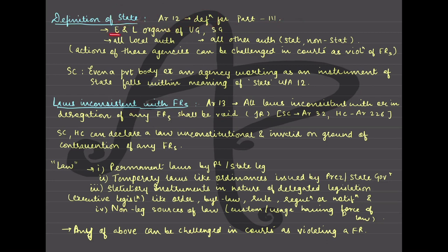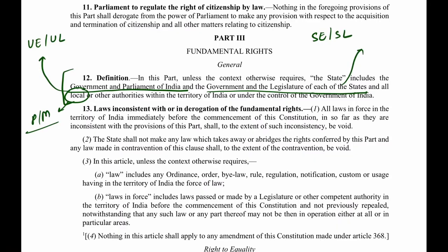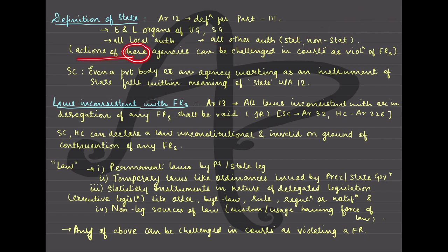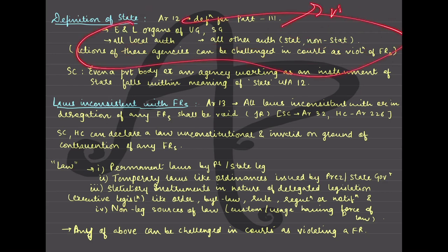Article 12 gives the definition for Part 3 and defines 'state.' State includes the executive and legislative organs of the union and state governments, all local authorities, and any other authority — whether state or non-state — that is related to the government in some way. Actions of these agencies can be challenged in courts as violations of fundamental rights. Whenever we say the state has violated something, it means any of these organs has violated something.